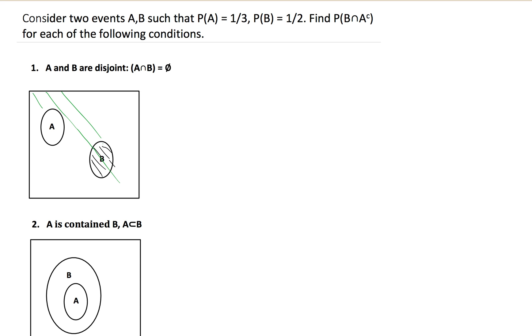So A complement, if you can see, includes all of B as well. So we want all the elements that are in A complement and in B. So in red here, we're going to give, essentially, you can see that it's just the entire set B, right?